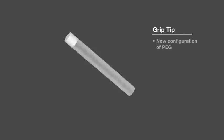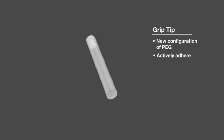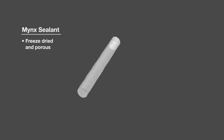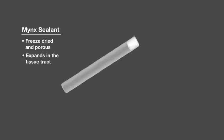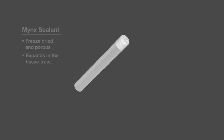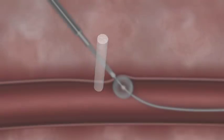The grip tip is a new configuration of PEG that allows the sealant to actively adhere to the artery. The Minx sealant is freeze-dried and porous, allowing it to expand in the tissue tract. Together, the grip tip and Minx sealant achieve a durable hemostasis.